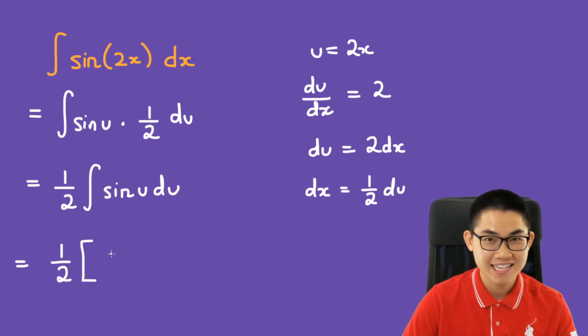The antiderivative of sine is what? It's going to be negative cos u.